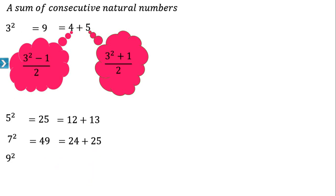Now 9² is equal to 81. From 81 subtract 1, giving 80, then divide by 2: 80 / 2 = 40. The next number is 41. So 81 equals 40 plus 41.